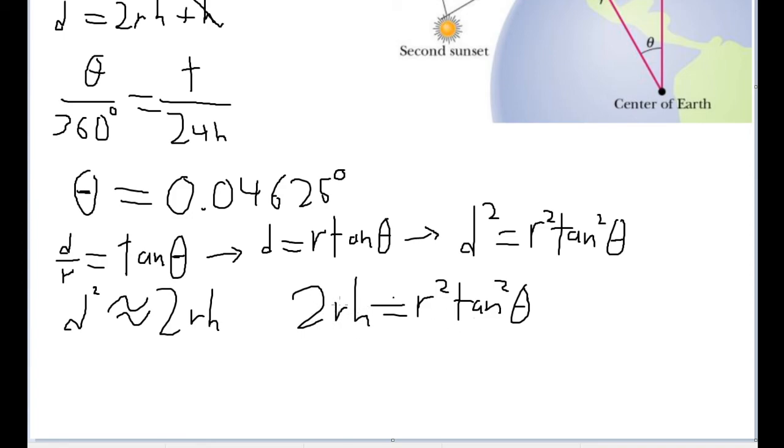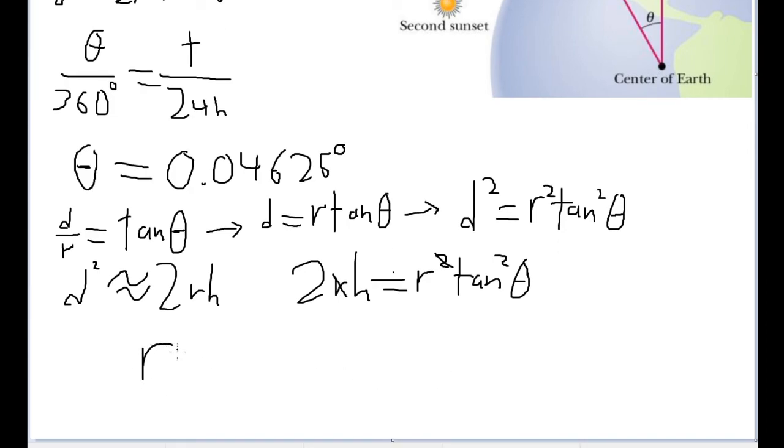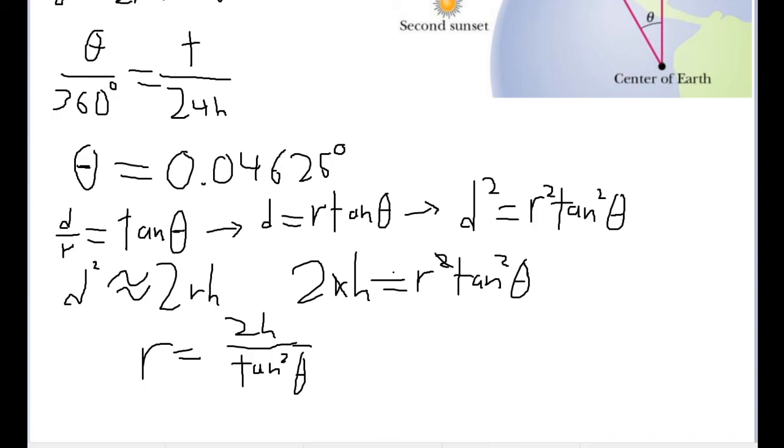And there's an r here and an r squared there, so let's take this r out and take out the square. And with a little bit of algebra, we can find that r would be equal to 2h divided by tangent squared of theta. Now, here we go, we have it, we have our expression for r here.